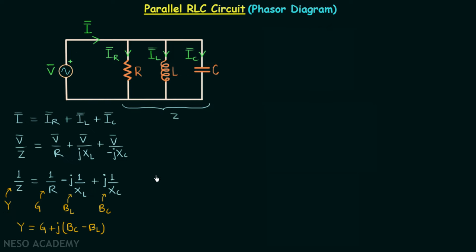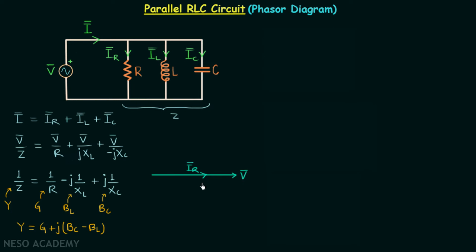To plot the phasor diagram I will take V phasor as the reference phasor. IR phasor is going to be in the same phase as V phasor but with a smaller magnitude. IL phasor will lag the voltage phasor by 90 degrees because it is the current through the inductor.